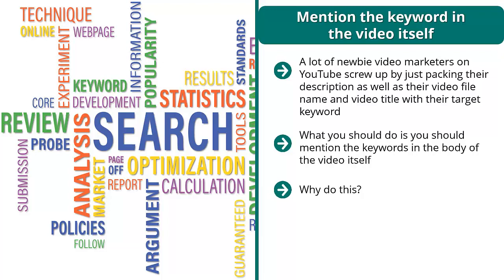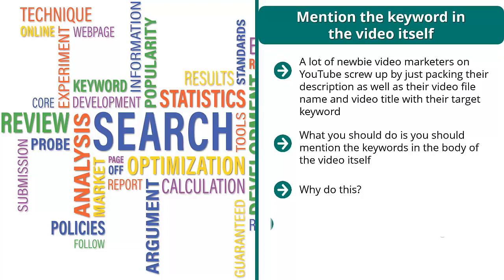Why do this? Does Google even know? Well, it does. Because when you upload a video on YouTube, it automatically transcribes it. This happens after a few hours — you upload a video and then after a few hours there will be a transcription. You're out of luck when the transcription is in another language, but oftentimes it's in English. So with this transcription, Google can determine whether your video actually talks about the keywords that you put in your description, title, or file name.